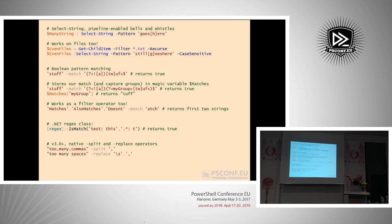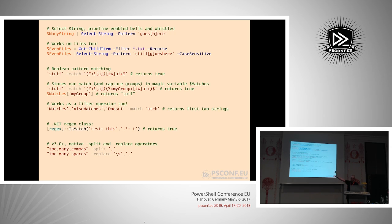The split operator takes a pattern on the right-hand side, tries to match it onto the string, and uses that match as a delimiter. In this example, a string containing words separated by commas split by a comma gives back three strings. Similarly, the replace operator takes two arguments: a regular expression pattern and a substitution. The escape sequence \s means whitespace, so it's going to look for any whitespace character and replace it with a comma. Doing the replace operation will give us back the string we originally split.